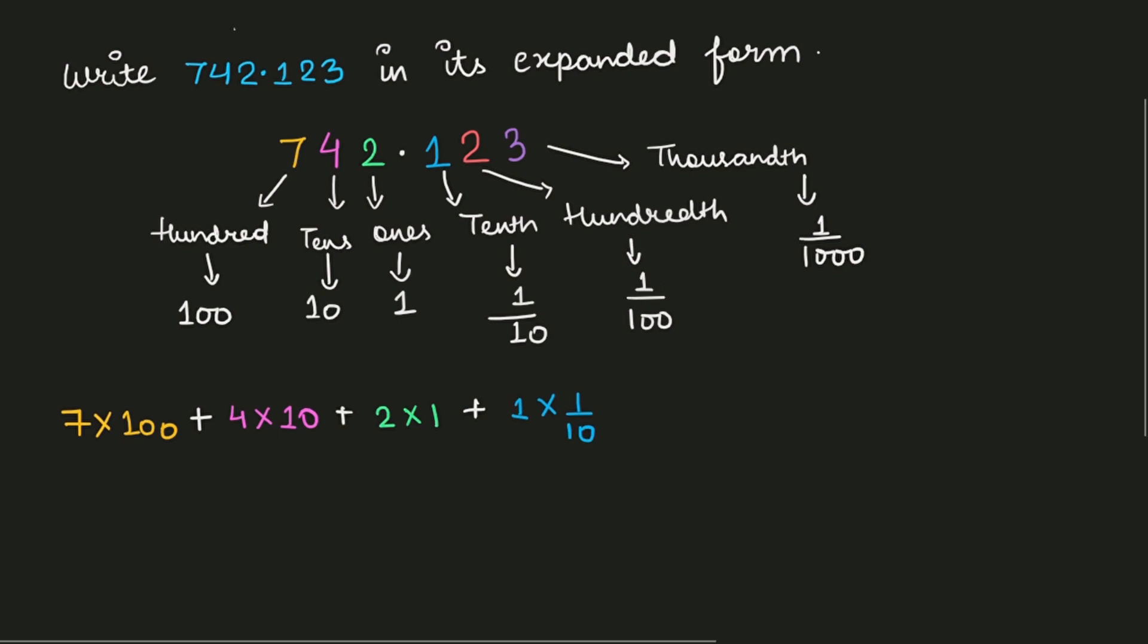The next digit is 2 after decimal point. So the place value of 2 is 100th means 1 upon 100. So 2 is multiplied with 1 upon 100. And the last digit is 3. So the place value of 3 is 1000th. So 3 is multiplied with 1 upon 1000.